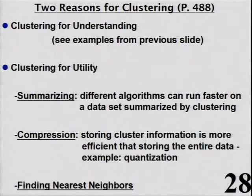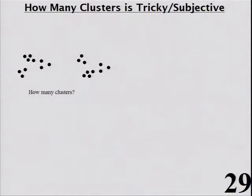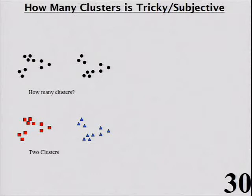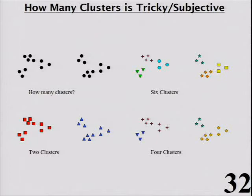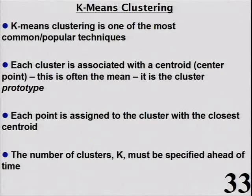How many clusters is always the question you can never answer — there's no algorithm that will really tell you the right number. Once you decide on k, you can write down objective functions and minimize them. But you generally have to decide ahead of time how many clusters you're looking for. The most common, popular technique is probably k-means clustering, where each cluster is associated with a centroid — often the mean.